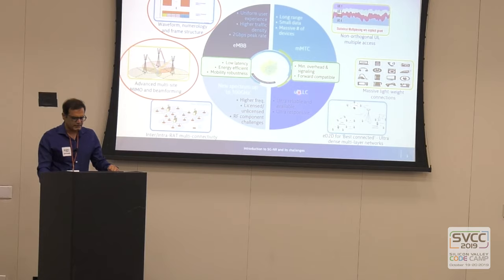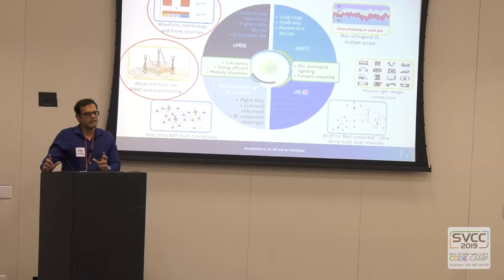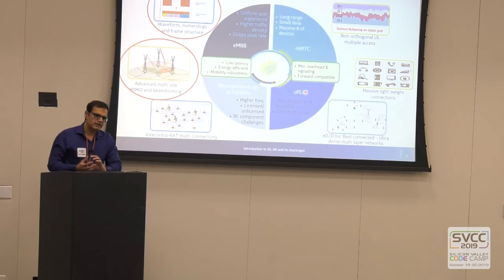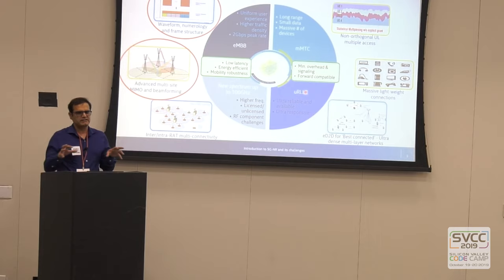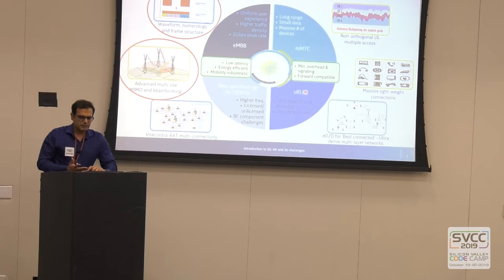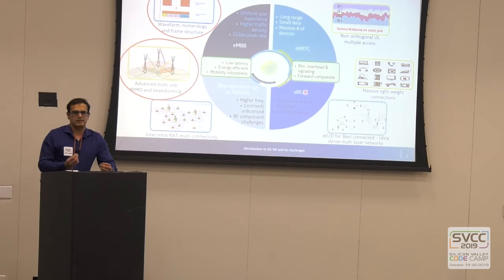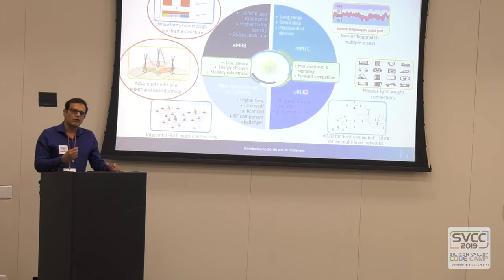Another idea that drove this revolution was URLLC — Ultra-Reliable Low-Latency Communication. You want communications to be very reliable. In scenarios like autonomous driving, vehicle-to-vehicle communication, or industrial sensors detecting faults, communication errors could lead to disasters. In health applications, a sensor in your heart talking with a doctor's device — you cannot afford an error in a bit sent to a surgeon. That idea of ultra-reliable communication came in, leading to a new spectrum and new requirements.